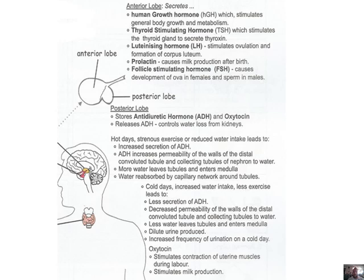We have prolactin, which causes milk production after birth — the mammary glands start filling up. It's mainly for afterwards. Some women don't produce prolactin at all and need to take tablets to start secreting milk. Interestingly, even someone who hasn't had a child could take medicine to produce prolactin and breastfeed.